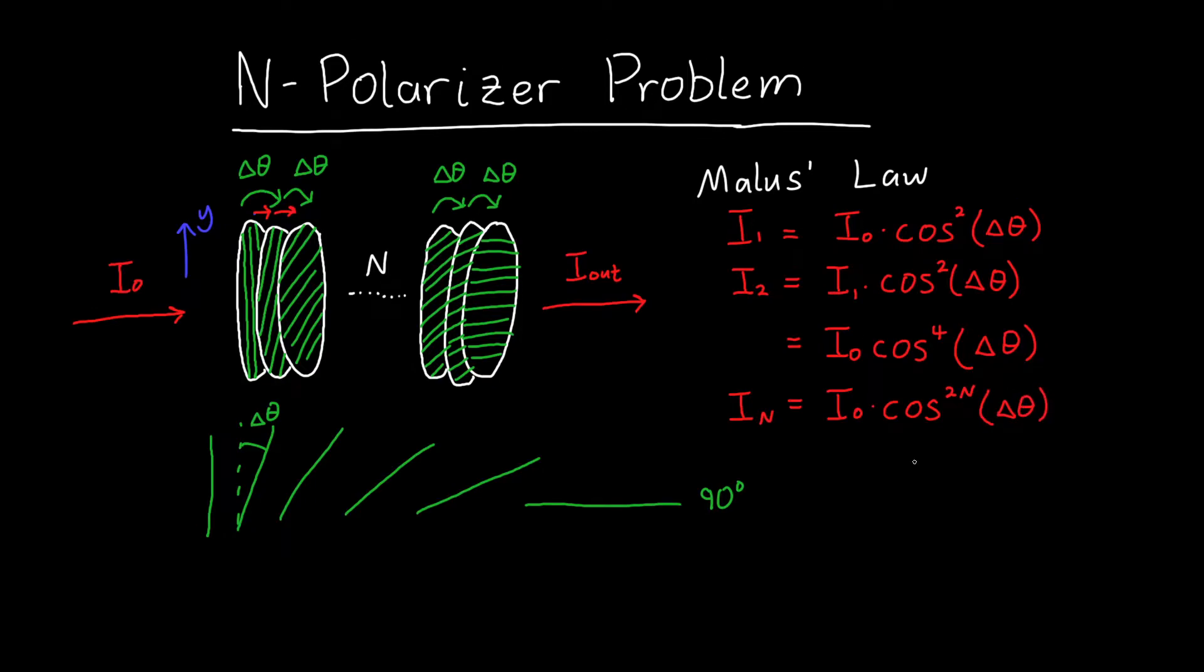Now, this isn't super informative as it is right here. We got a nice equation, but what does it actually mean? Well, I'm going to tell you that the number of polarizers is large, and what this means is that Δθ is small. Any time you hear the word small in any sort of math context, I want you to immediately think series approximation, because this will make our lives much easier and allow us to gain some insight.